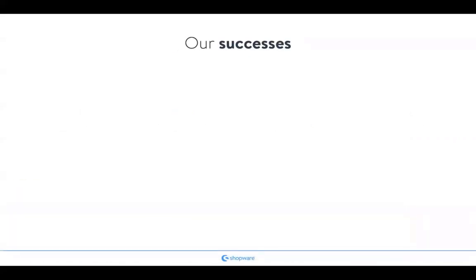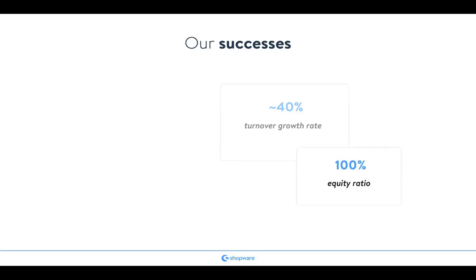I don't want to bore you too much with figures, but I brought a few key figures that should show you different things. For example, our turnover growth rate should show you that we are a healthy company — despite all the investments we make, we have a steady turnover growth rate of 40%. A number that is very special in our industry is the 100% equity ratio. So the two founders have equal share of the company and we can decide where we want to develop our software in the future. If we think the market needs different functionalities, we can develop that straight away without going to investors.